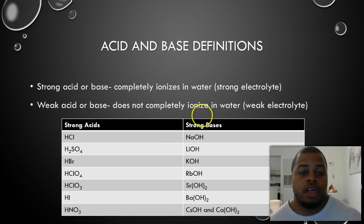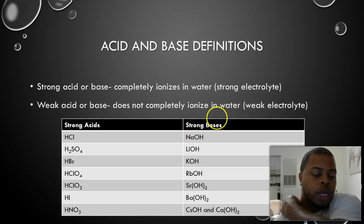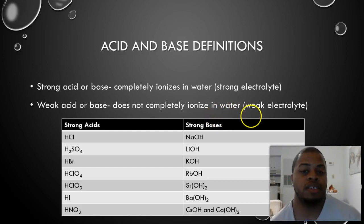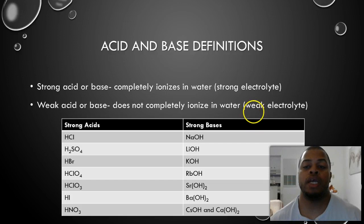Now, when we get started, a couple of things we want to do. The first thing is, a strong acid-base is going to be defined as one that completely ionizes in water. This is going to be a strong electrolyte, pointing back to where we were in Unit 1, or Part 1. Whereas a weak acid-base does not completely ionize in water. This is going to be a weak electrolyte.